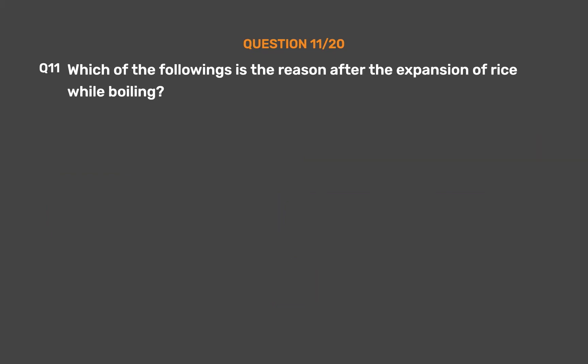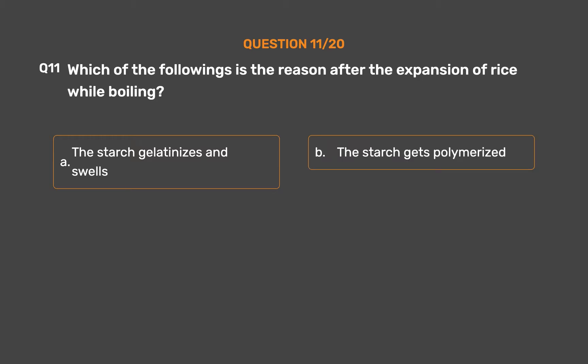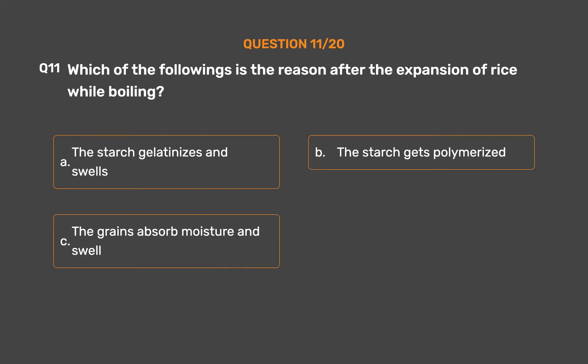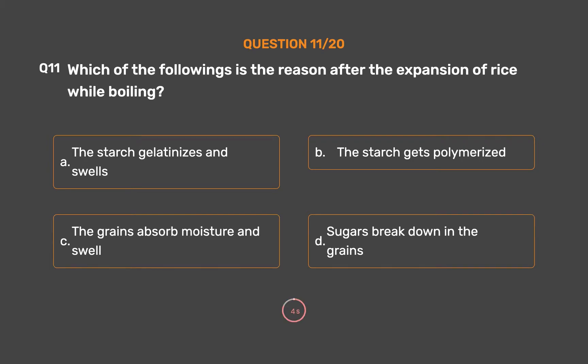Question number 11. What is the reason behind the expansion of rice while boiling? Option A: The starch gelatinizes and swells. Option B: The starch gets polymerized. Option C: The grains absorb moisture and swell. Option D: Sugars break down in the grains. The correct answer is Option C, the grains absorb moisture and swell.